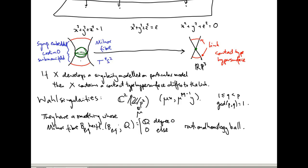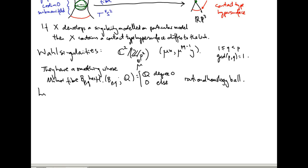These are the only cyclic quotient singularities that have such a smoothing — which is why they're called rational homology balls. This makes them difficult to detect topologically. In the nodal singularity example, you could hope to prove there's no such singularity purely homologically, by proving there's no spherical class with self-intersection −2. But here there's basically no homological data, so it becomes much harder to rule them out.